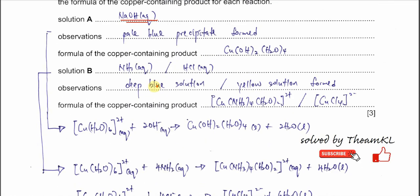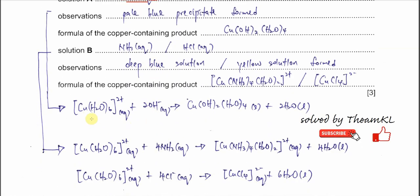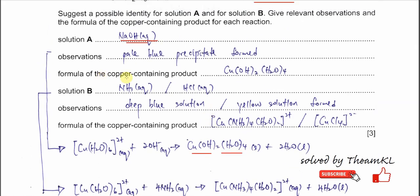The equation is: the hexa aqua copper 2+ ion will react with hydroxide to form [Cu(OH)₂(H₂O)₄], the copper now with 2 hydroxide and 4 H₂O. This is the pale blue precipitate that forms. This is the formula of the copper-containing product, a pale blue precipitate.